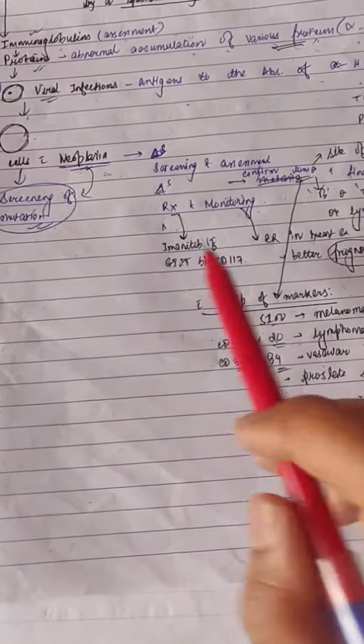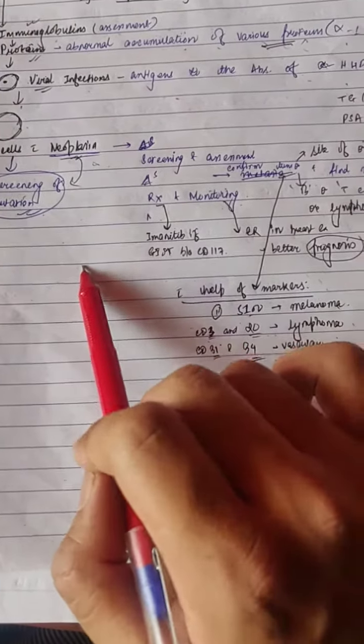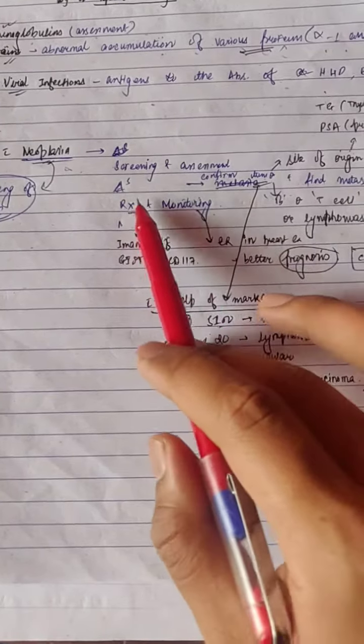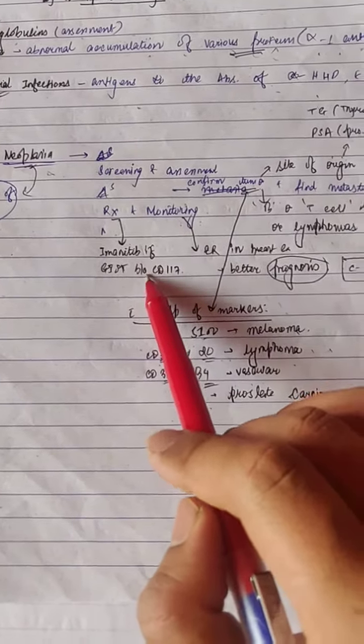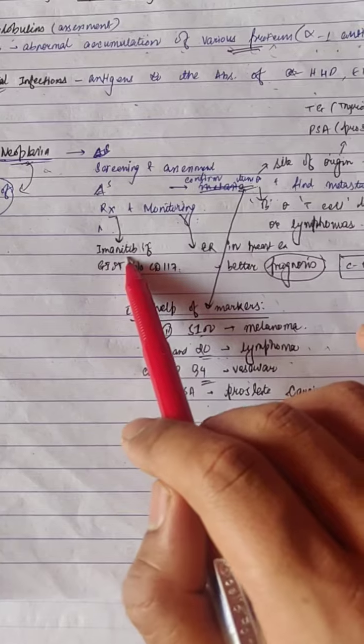Screening for mutations. Treatment and monitoring, for example GIST-1. If CD1 is positive, you can treat with immunotherapy.